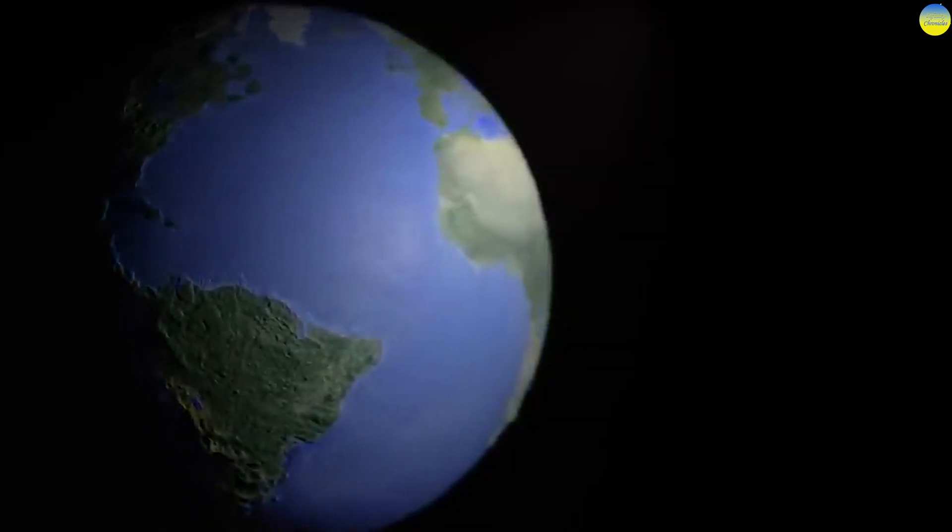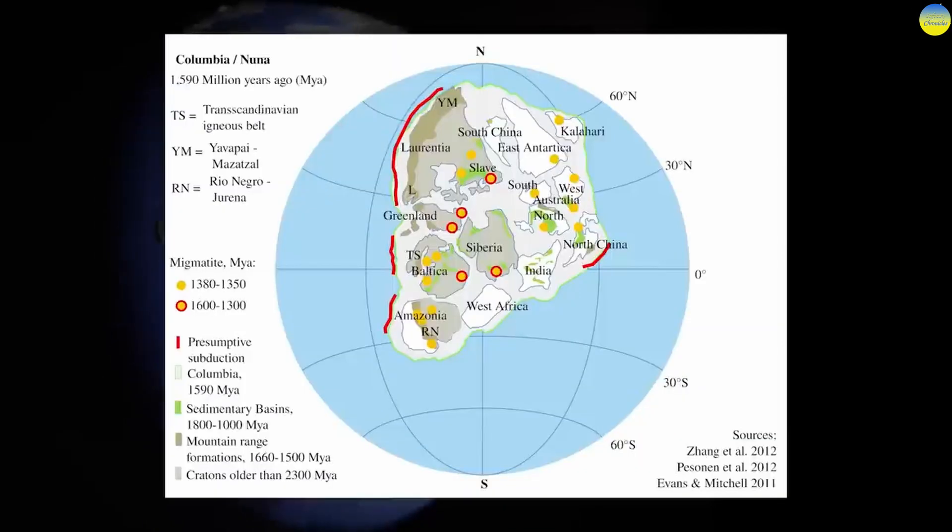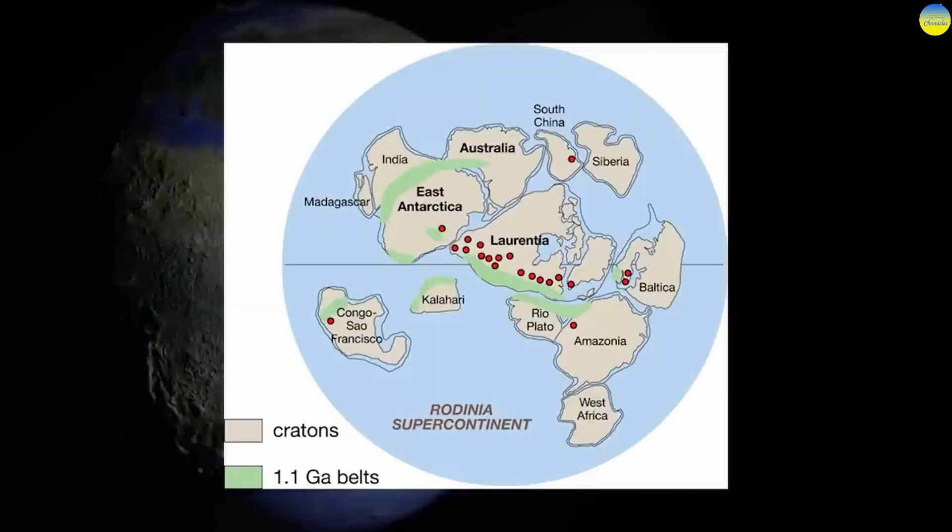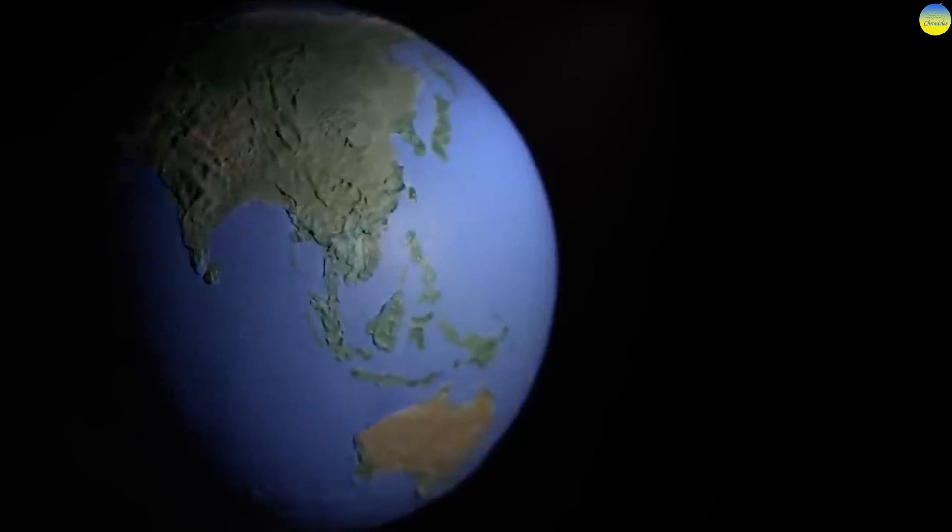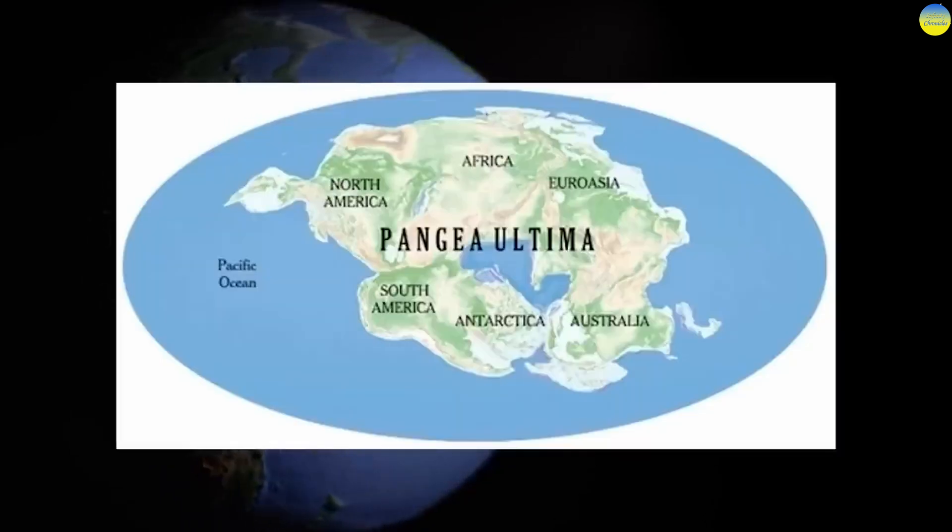Today, we know several more supercontinents before the formation of Pangaea, such as Columbia and Rodinia. According to some forecasts, in 200-300 million years, all continents will again form a supercontinent, the Pangaea Ultima.